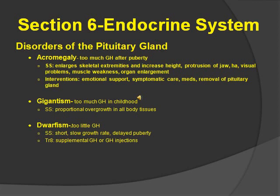Signs and symptoms of gigantism are just proportional overgrowth in all body tissues — think of someone who's really tall but proportionally built, not with thin extremities or a thin trunk. Then we move on to dwarfism. This is too little growth hormone — they're going to be short, have a slow growth rate, delayed puberty, etc. Treatment is supplemental growth hormone injections.